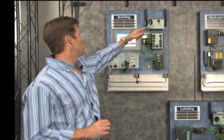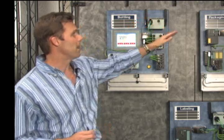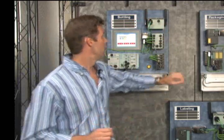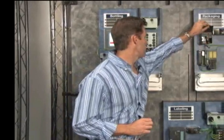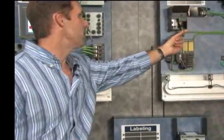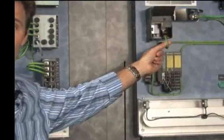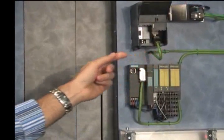Using the Siemens Scalance wireless access points you see on the panels. To make this hardware solution even cleaner, the controllers we're using actually have an industrial enhanced version of Ethernet called Profinet built directly on board the controller.